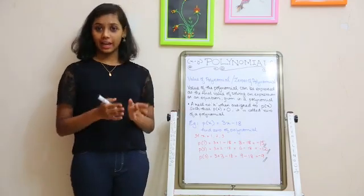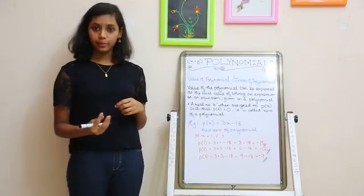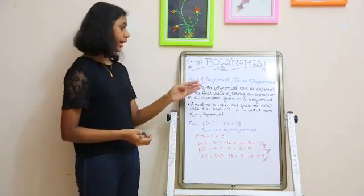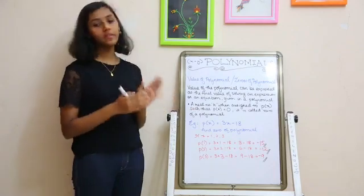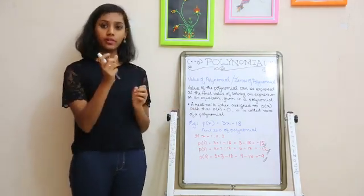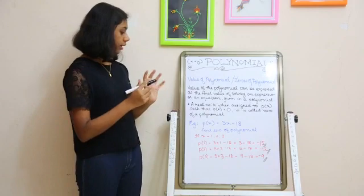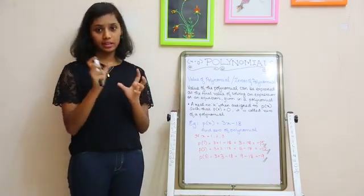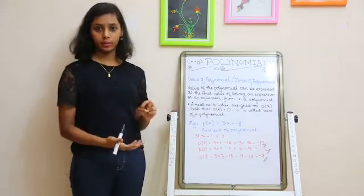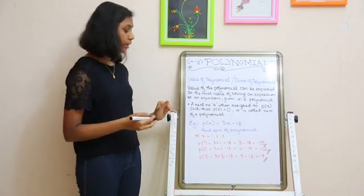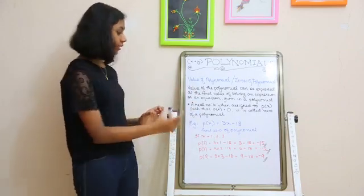Next we are going to learn about the value of the polynomial, or zeros of the polynomial. The value of the polynomial is the final value obtained by solving an expression or equation. When we solve the equation, whatever value we get for x is called the value of the equation. For example, p(x) = 3x − 18.